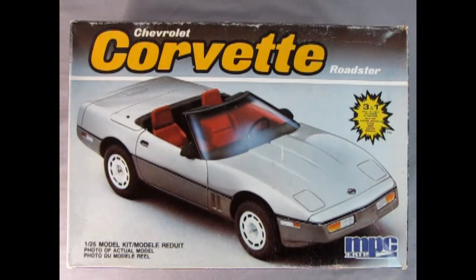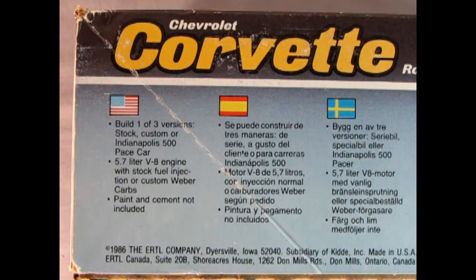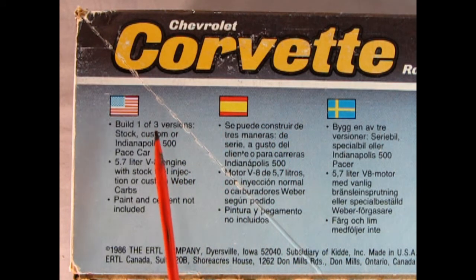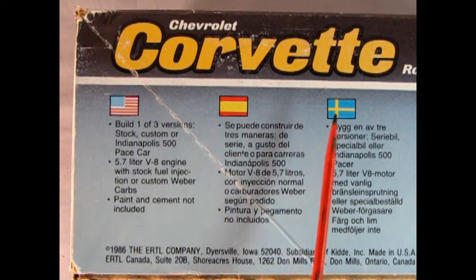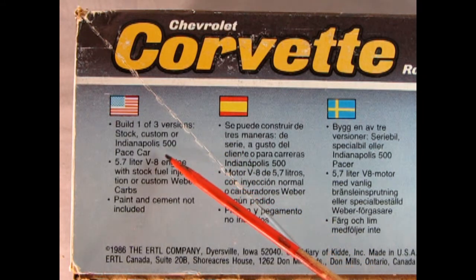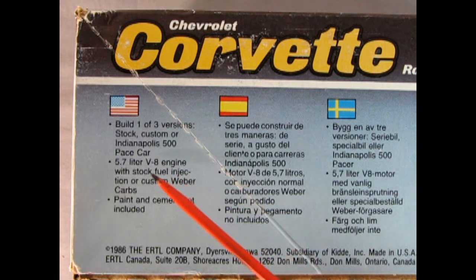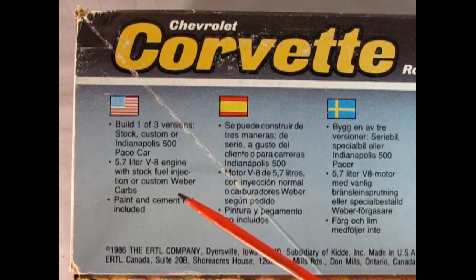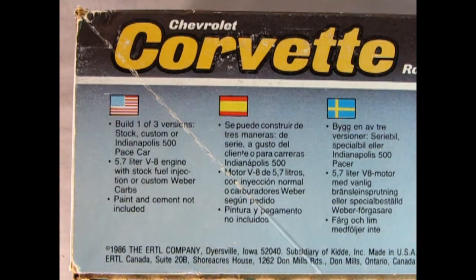1986 also saw the return of the Corvette convertible, the first time since 1975. Here we have the Chevrolet Corvette Roadster 3-in-1 kit by MPC. This model kit is in 1/25th scale. On the side of the box we can read details in English, Spanish, Swedish, German, and French Canadian. Build one of three versions: stock, custom, or Indianapolis 500 pace car, which is unique to the '86 Corvette. It has a 5.7 liter V8 engine with stock fuel injection or custom Weber carbs.